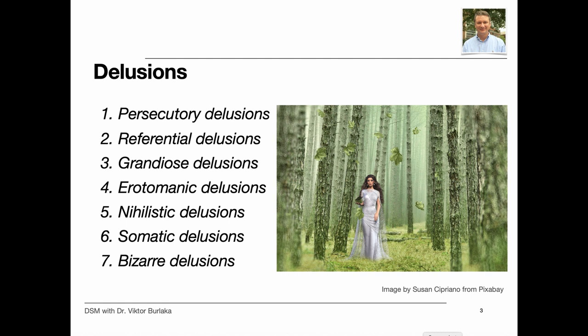Delusions are fixed beliefs that are not amenable to change in light of conflicting evidence. Examples of persecutory delusions are beliefs that one is going to be harmed, harassed, and so forth by an individual, organization, or other group — they are most common. Referential delusions are beliefs that certain gestures, comments, environmental cues, and so forth are directed at oneself.